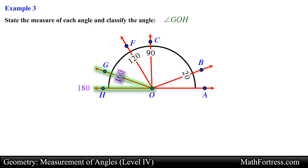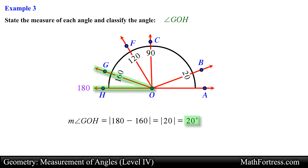Ray OG is aligned with the 160 degree mark. So the measure of angle GOH will be equal to the absolute difference of these two angle measurements. Simplifying the expression, we obtain 20 degrees for the measure of angle GOH. So this angle can be classified as an acute angle.